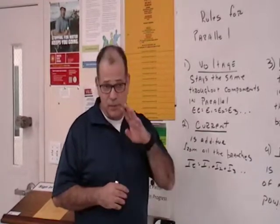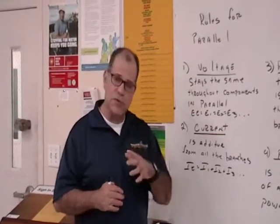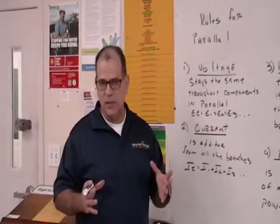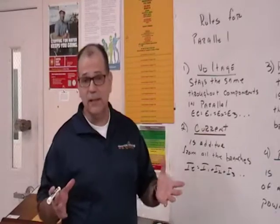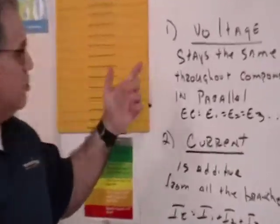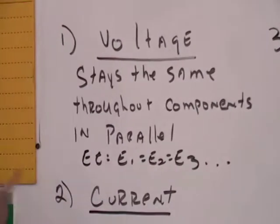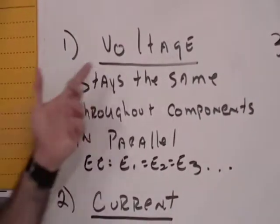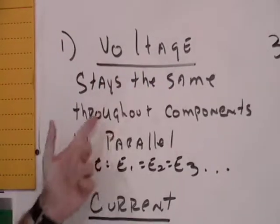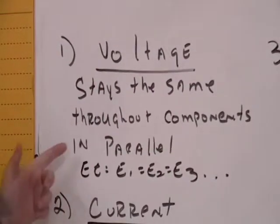And there's actually four things. And those four things are the rules that govern how parallel circuits are acting or how they behave. The first rule, just like in series, is the voltage. So the rule for voltage in a parallel circuit is the voltage stays the same throughout the components in parallel.